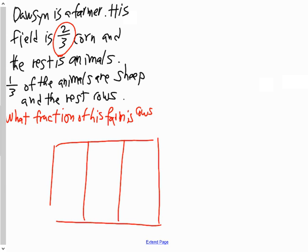Why thirds? Because two-thirds are corn. So I'm going to highlight and use the appropriate color of yellow for corn. So this is all corn here in Dawson's farm, and I could even write the word corn and corn.